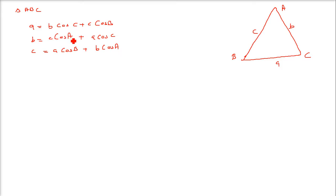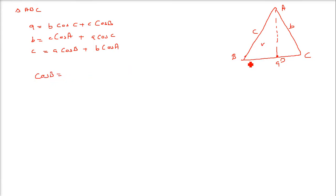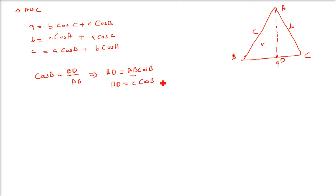So how do we get this? There are two cases. The first case is when the triangle is an acute angle triangle. Drop a perpendicular and call it D. In this triangle, cos B equals base upon hypotenuse — BD divided by hypotenuse AB. So BD equals AB cosB, and AB is C, so BD equals C cosB.